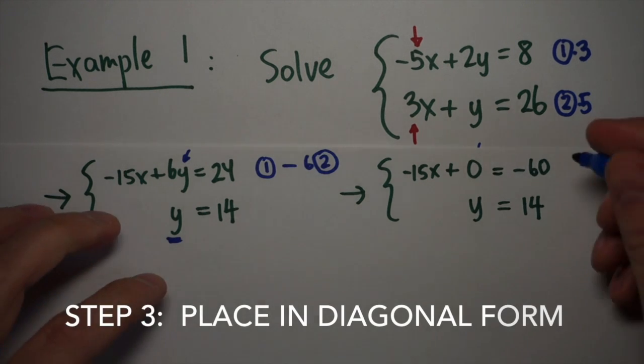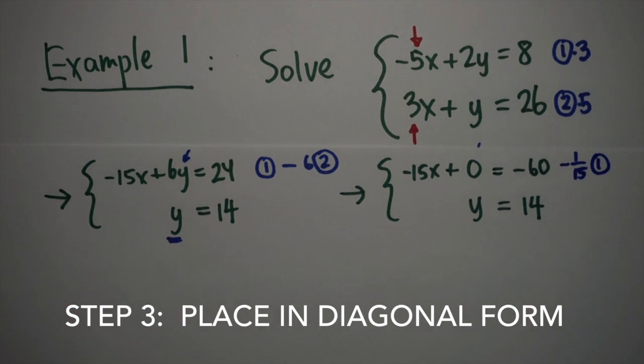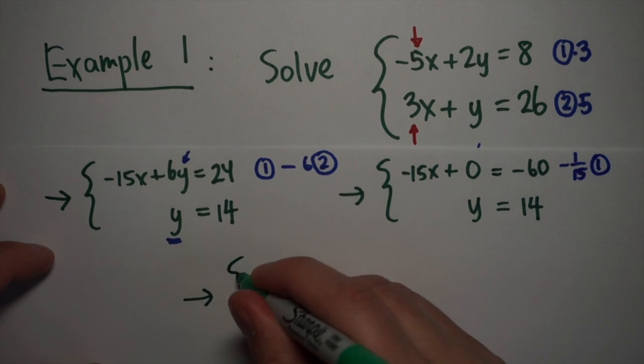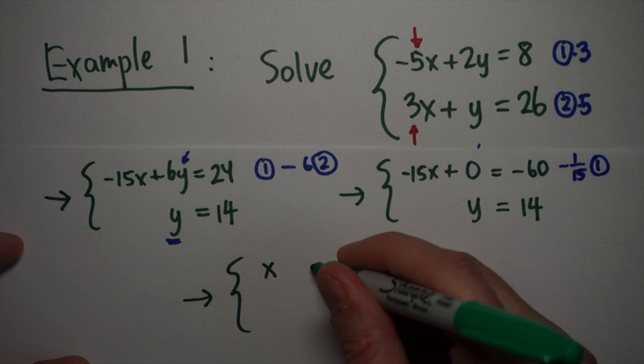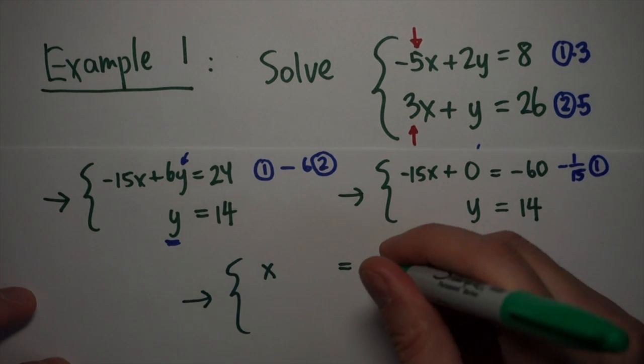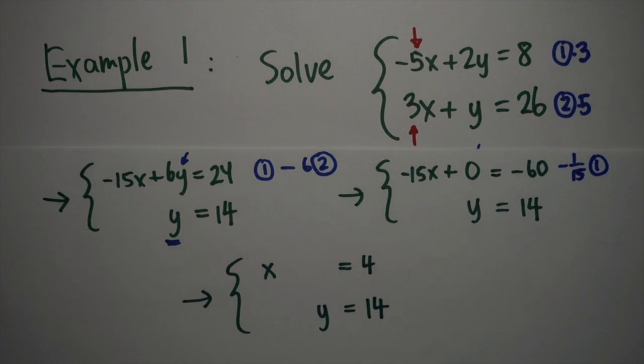The last step is to get it into full diagonal form by multiplying my first equation by something that'll get rid of the coefficient of the x. In this case, negative 1 over 15. Or divide by negative 15. So, negative 15x over negative 15 is 1, or 1 times x. And then negative 60 over negative 15 is 4. So our final solution is x equals 4 and y equals 14. You could probably have solved this in a faster way, but this method is nice because it's going to allow us to solve larger systems in a very algorithmic way, which will be useful.